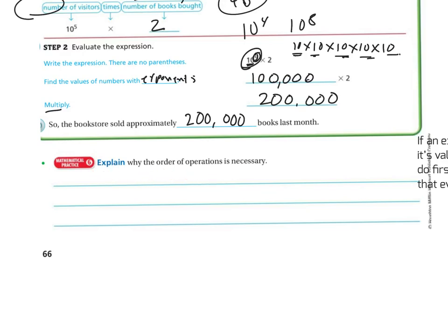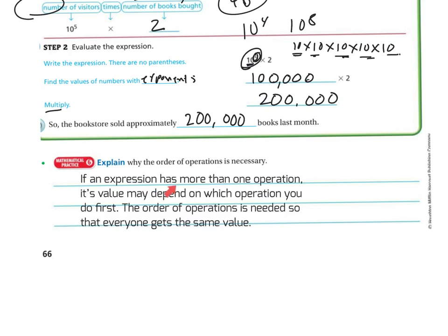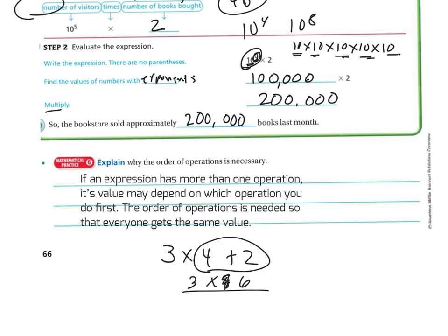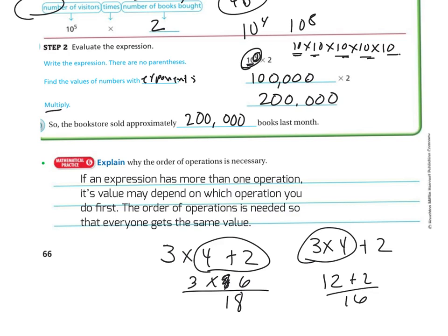Now explain why the order of operations is necessary. If an expression has more than one operation, its value may depend on which operation you do first. The order of operations ensures everyone gets the same value. For example, with 3 times 4 plus 2 — if you do the addition first, you get 6 times 3 which is 18, but if you do multiplication first, you get 12 plus 2 which is 16. Very different numbers, so it's really important to follow the order of operations.